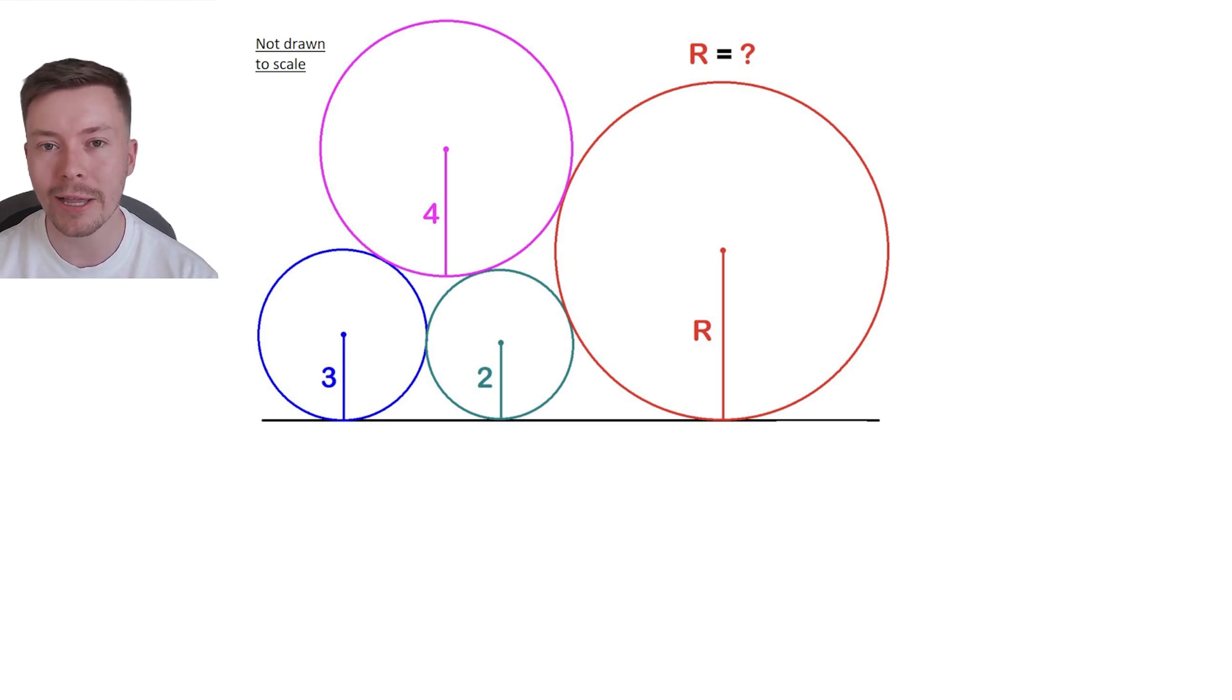It's not drawn to scale, so just bear that in mind when you're solving it. These circles are touching each other in this formation and we have the radii of three of the circles and we want to work out the radius of the fourth one.